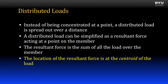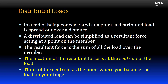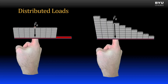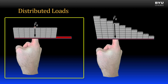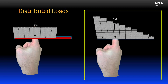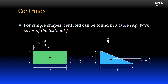Not only do we need to know the magnitude and direction of the resultant force, but to have an equivalent system we also need to know where the resultant force is located on the member. The location of the resultant force is at the centroid of the load. The centroid is also known as the center of mass or center of gravity — you can think of it as the point where you can balance the load across your finger. For a rectangular load the centroid is right in the middle. For the triangular load the centroid is off-center, closer to the tall end of the triangle.